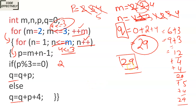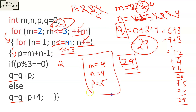If the examiner asks for the current values of M and N after execution, you can say the current value of M is 4, N is 4, and P is 5. Hope you understand this program. If you understand this logic, go and try it yourself. If you don't, comment in the comment section. If you like this video, please subscribe to the channel and share the videos with your friends. Thank you for watching the output prediction video.